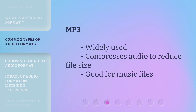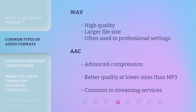MP3 is widely used and compresses audio to reduce file size — good for music files. WAV offers high quality with a larger file size, often used in professional settings. AAC uses advanced compression for better quality at lower sizes than MP3, and is common in streaming services.